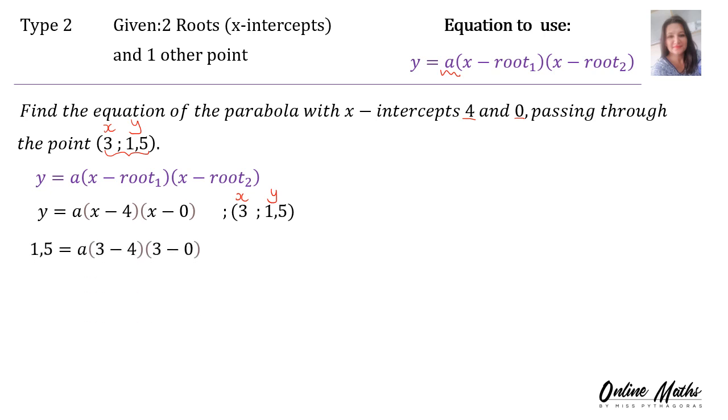Therefore, in y's place, 1.5 equals a bracket in x's place. And can you see, everywhere there's two x's. Everywhere where you see an x, you substitute the 3. So it's a bracket 3 minus 4 bracket 3 minus 0.